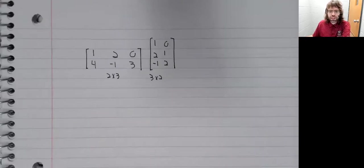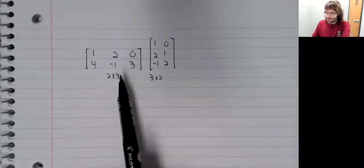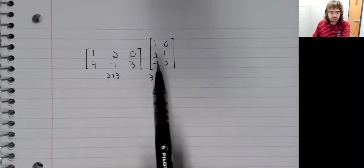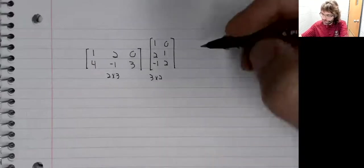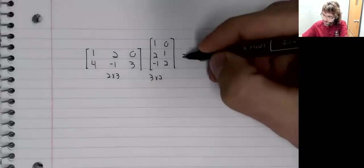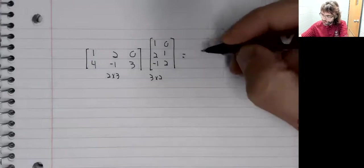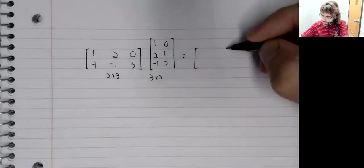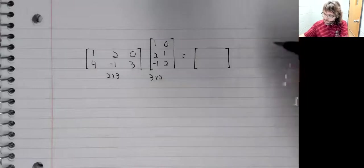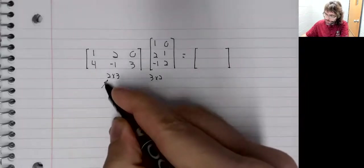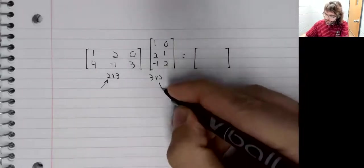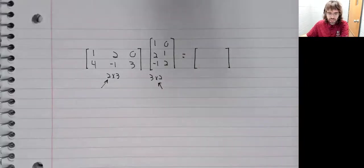So that's demonstrated via example. Say we have this matrix times this matrix. The result is going to be a two by two matrix.